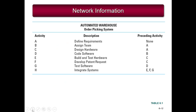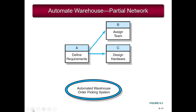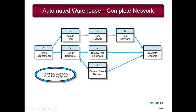This is a copy of Table 6.1 from the textbook. It shows the network information used to construct the network diagram — activities listed with descriptions and their preceding activities on the far right — for the automated warehouse or banking system. The next slide shows a sample part of that network diagram, and then the complete network showing all activities from final requirements through integrated systems, with each activity and its preceding activities.